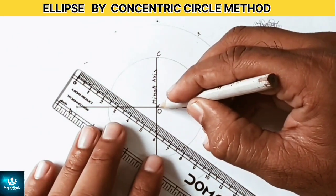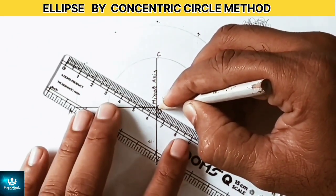Next join each marked point on the outer circle with the center O.